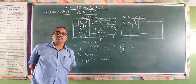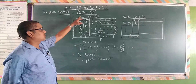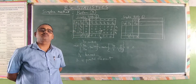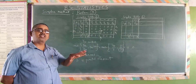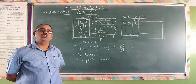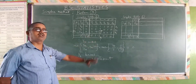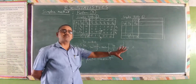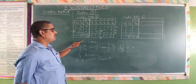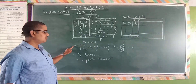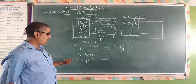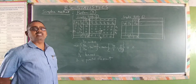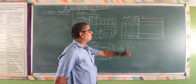Welcome to the second part of simplex method problem 3. We are doing problem 3 in the simplex procedure. It is a minimization problem. We have finished up to the end of simplex table 1, and we are now ready to enter into simplex table 2. We have calculated the minimum ratio, y6 leaves, and obtained the pivotal element.